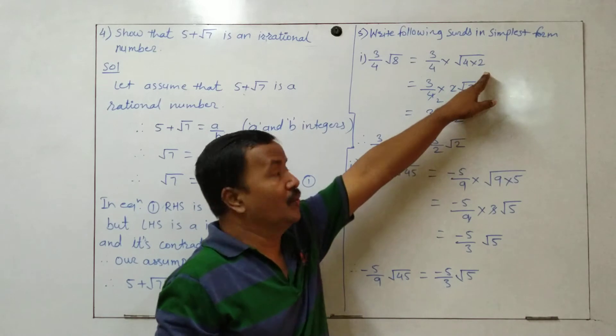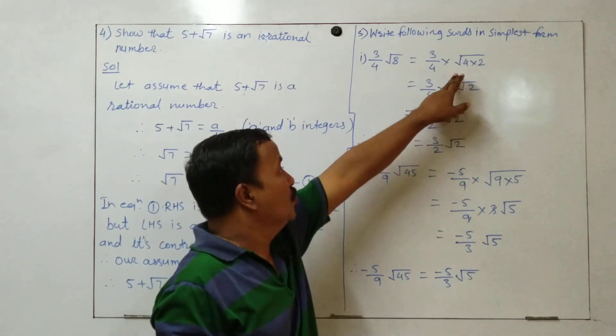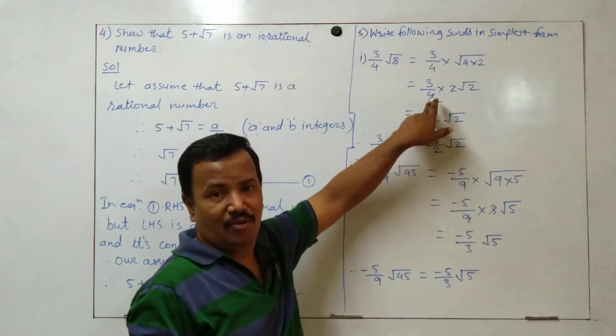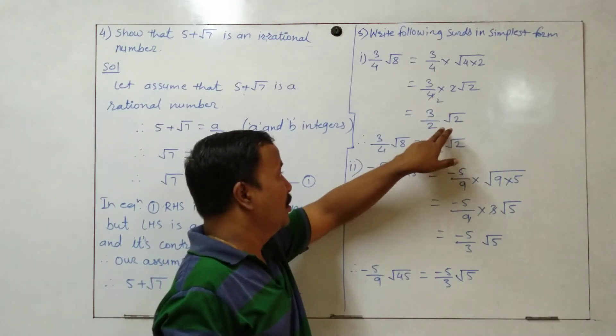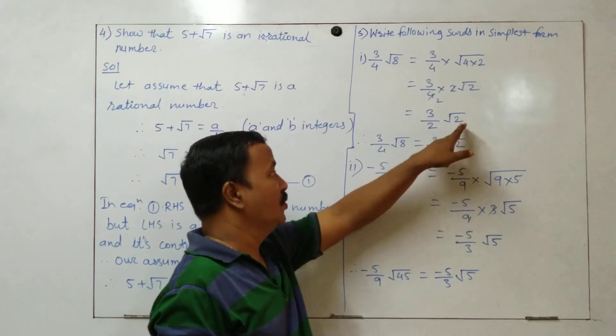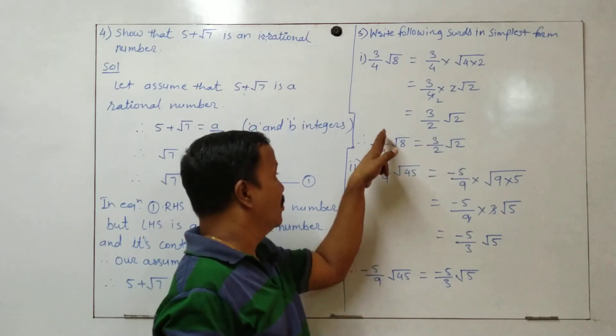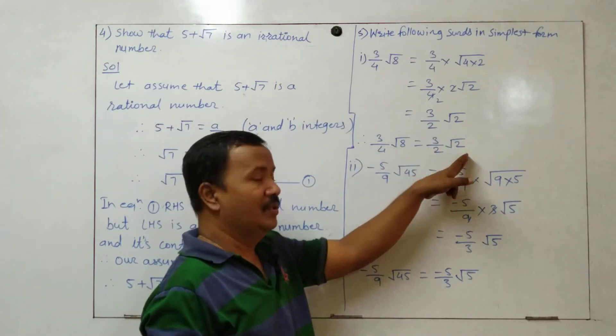So 4 into 2. 4 ka square root is 2. Root 2. 2 ones are 2, 2 twos are 4. Cut these, so we get 3 upon 2 root 2. Therefore, 3 upon 4 root 8 is equal to 3 upon 2 root 2.